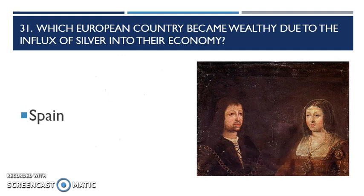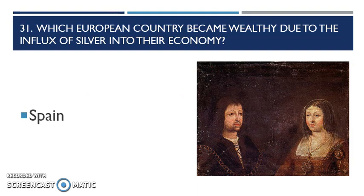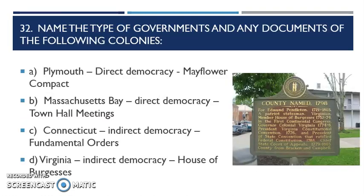Question 31: which European country became wealthy due to the influx of silver in their economy? Spain. Spain came here for God, gold, and glory. Well, they don't really find gold — they find silver. But because they're bringing so much silver back over to the old world, to Spain, to Ferdinand and Isabella, everybody's kind of looking at them and getting a little jealous. Particularly England, and they're going to get in on this age of exploration — they just get in a little later than the other countries.